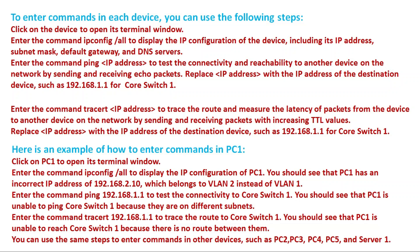Here is an example of how to enter commands on PC1. Click on PC1 to open its terminal window, then enter 'ipconfig /all' to display the IP configuration — IP address, subnet mask, and default gateway. You should see that PC1 has an incorrect IP address of 192.168.2.10, which places it on VLAN 2 instead of VLAN 1. Then enter 'ping 192.168.1.1' to test connectivity to core Switch 1. You should see that PC1 is unable to ping core Switch 1 because there is no route between them.